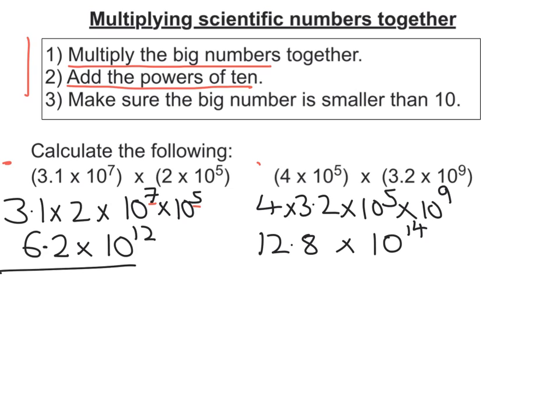Now lastly we need to make sure the big number is smaller than 10. Well 12.8 is bigger than 10, so I need to make that between 1 and 10. So really I'm going to make 12.8 into a scientific notation number. So what we would do is we'd write that as 1.28.